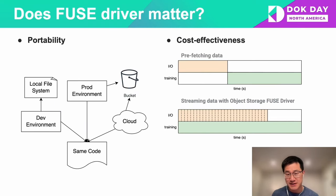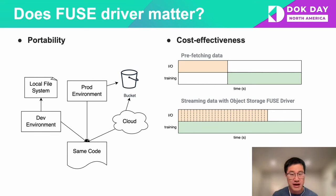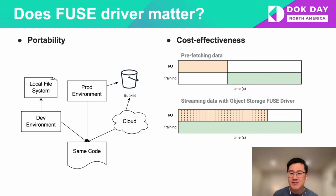Let's take a look at portability first. Running the same workload in different environments usually requires code refactoring. For example, data scientists usually use a subset of the training dataset from a local file system to develop and tune their training code. When they need to lift the code to cloud or deploy to production to train the model, the training job needs to consume the entire dataset stored in object storage buckets. In some cases, they have to refactor the code using cloud provider SDKs or APIs to access the data. Using an object storage FUSE driver avoids this by allowing AI applications to access data in buckets directly using the file system, without dealing with cloud provider SDKs or APIs.